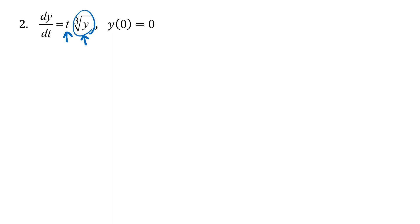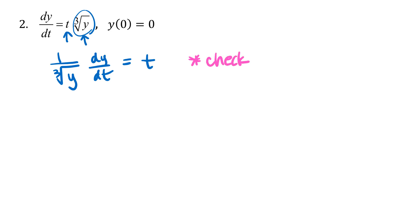The first thing we're going to do is divide through by the function of y, so we have one over the cube root of y times dy/dt equals t. At the instance when you do that, you want to note that if y is zero there's a problem, so you need to come back and check y equals zero — specifically whether the constant function y equals zero is a singular solution or not.